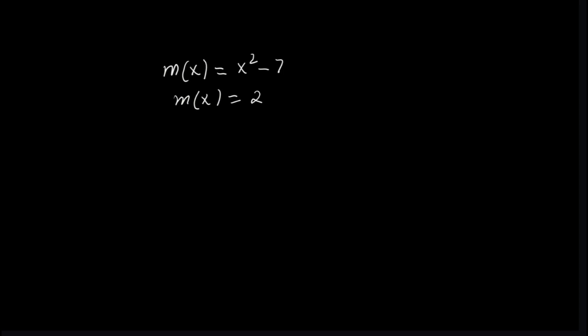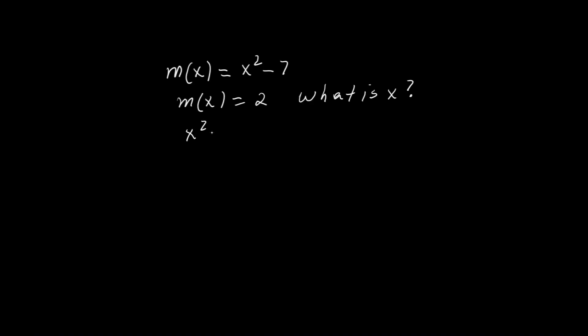m(x) = x² - 7, and we are told m(x) = 2. To find the input, we start by writing an equation. Set the function equal to 2: x² - 7 = 2.